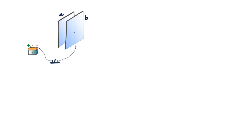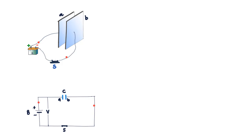Let us look at how a capacitor can be charged. Take two conducting plates and connect them to the terminals of a battery, then flip the switch. A battery maintains a potential difference between its terminals, one positive and one negative. When the circuit is set up, electrons flow due to the electric field the battery creates. Electrons from plate A move toward the positive terminal of the battery, leaving a positive charge on plate A, while the same number of electrons leave the negative terminal and accumulate on plate B.